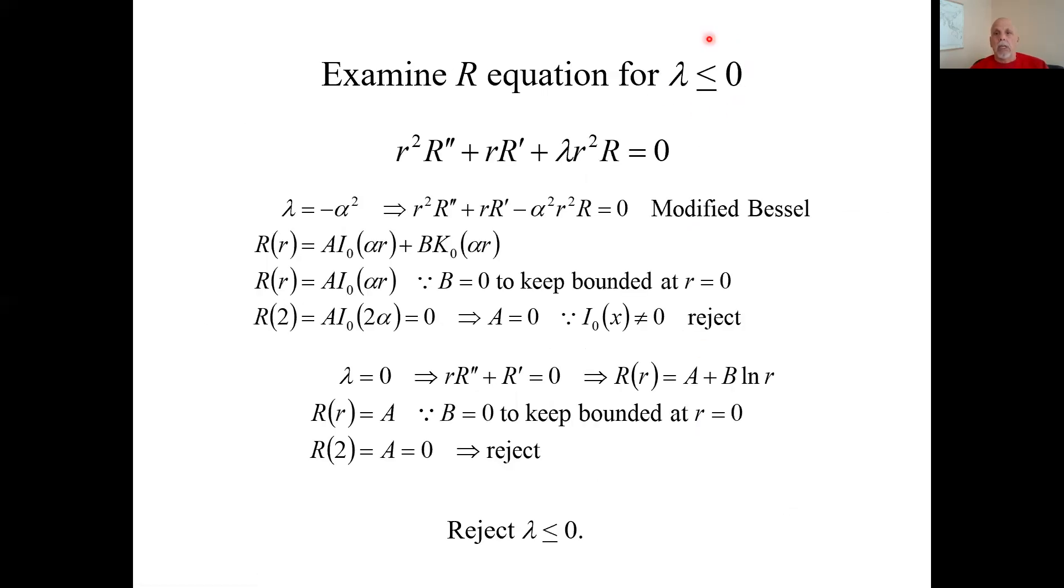So let's look at the non-positive lambdas first. Here's the equation in R. So if it's negative, I set it equal to minus alpha squared. Here I get the modified Bessel equation of order zero with this general solution. We're again going to require boundedness as an implicit boundary condition. The center of this cylinder is included. That's where r equals zero. And this modified Bessel function of the second kind blows up at r equals zero. It becomes unbounded as the argument goes to zero. So we set this coefficient B here to zero and the surviving function is this guy.